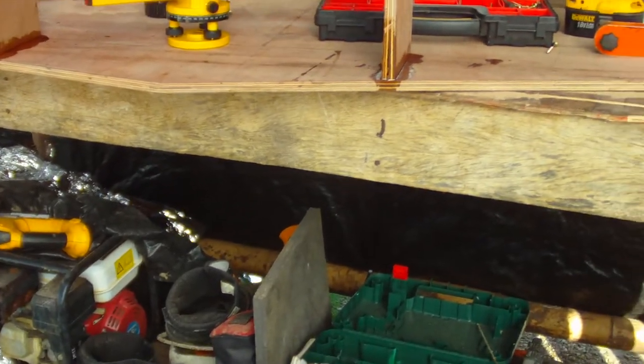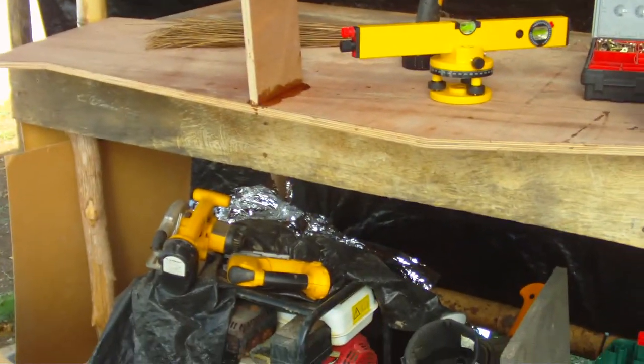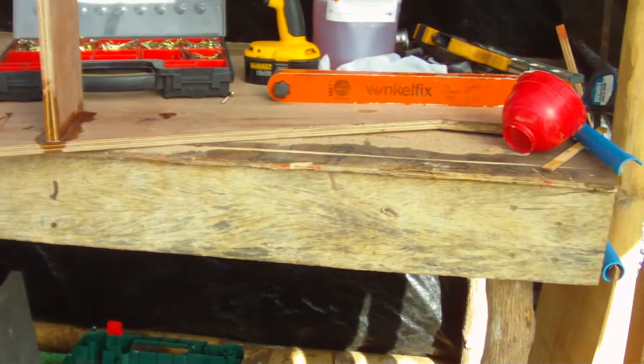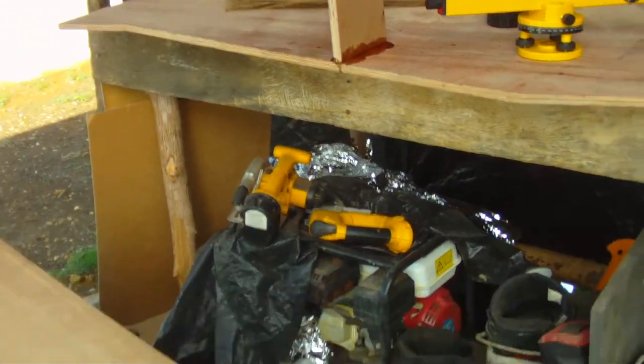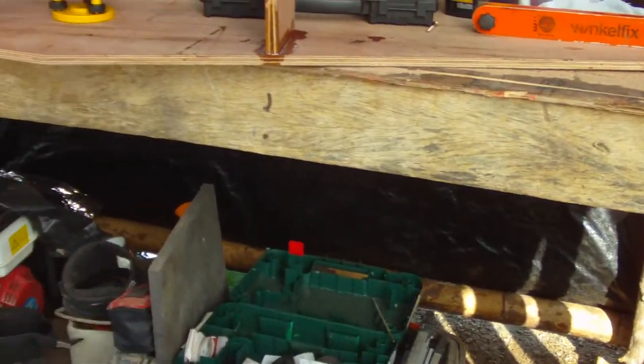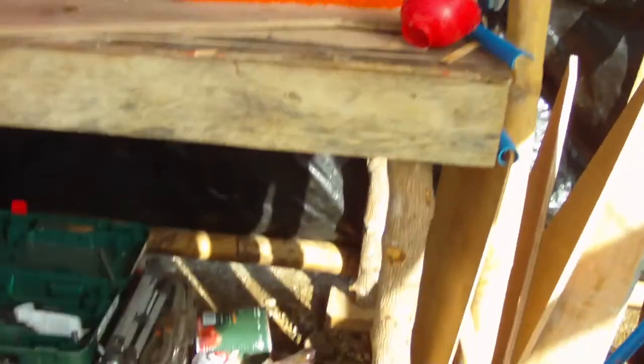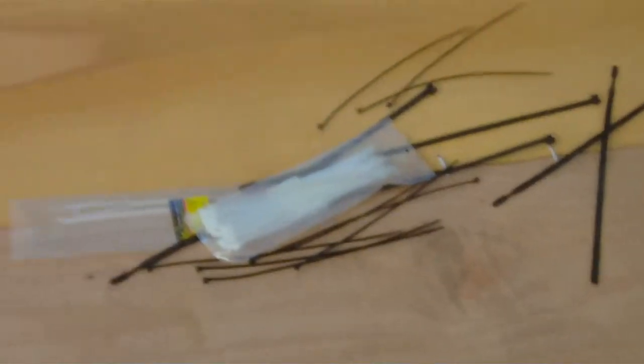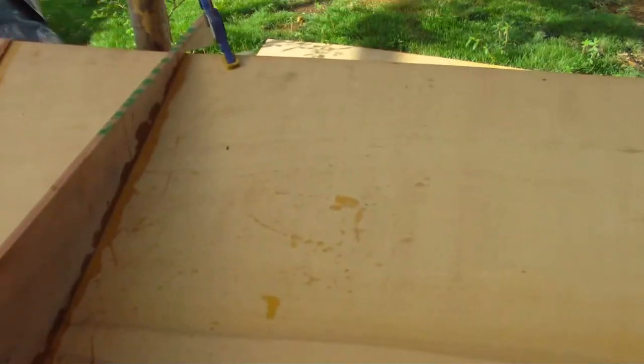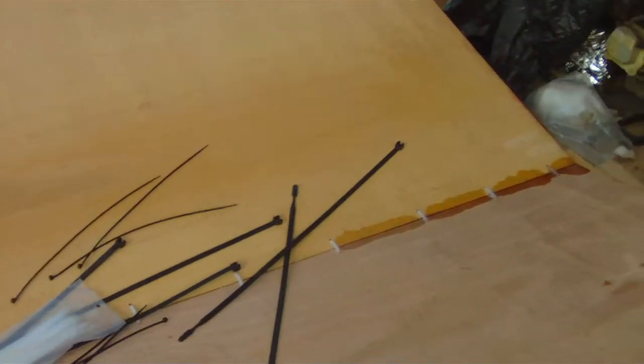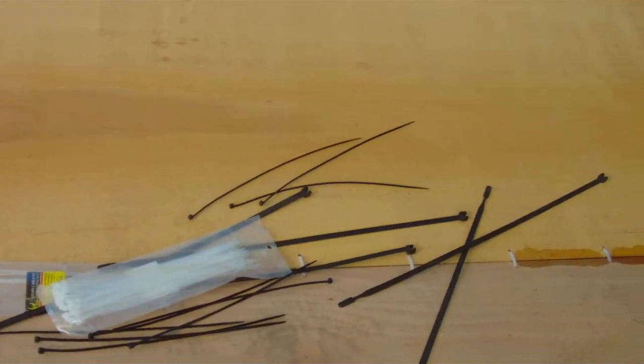Those two braces I've made, they're just to support the transom, really. They'll give me a bit of something to hold it square while the epoxy goes off. Yeah, I'm going to run some 4 or 6 longitudinal gussets down the length, and then that'll help to support the floor.